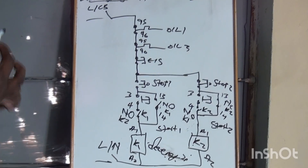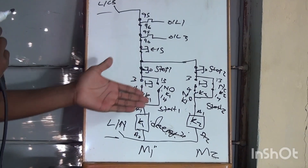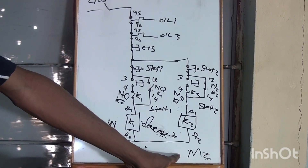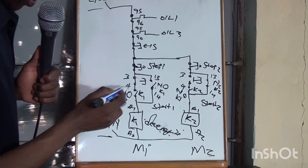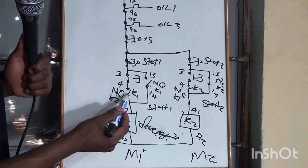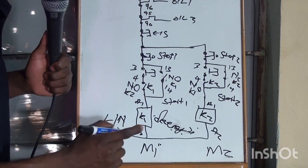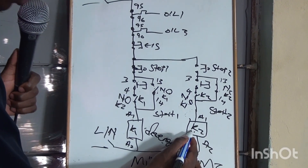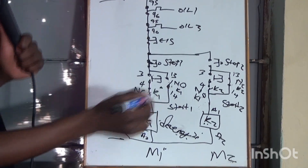You've stopped Motor 1. When the coil de-energizes, the normally closed contact becomes normally open again. You try to press the start button to restart Motor 1, but current tries to run and finds a normally open contact from K2 — so it can't get through. Motor 1 cannot be restarted while Motor 2 is running. However, if you decide to stop Motor 2, the K2 coil de-energizes, that contact becomes normally closed again, and now you can restart Motor 1.